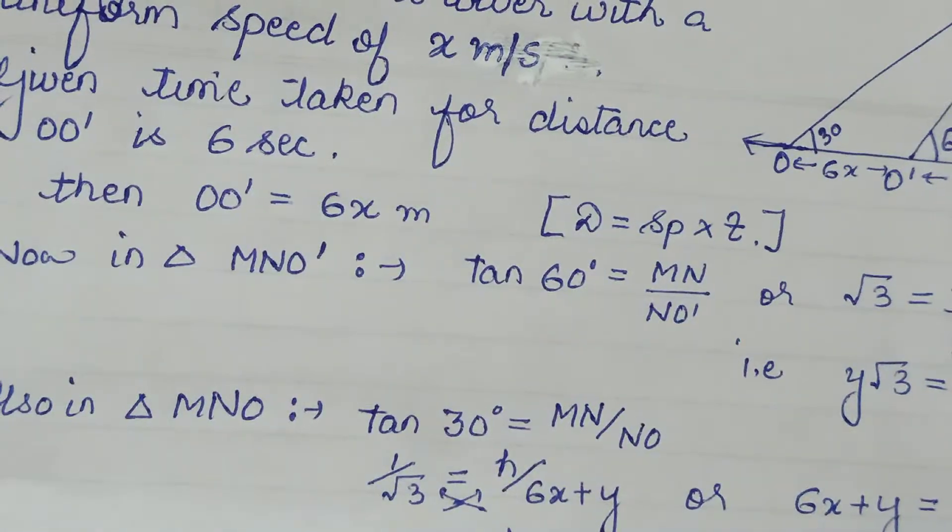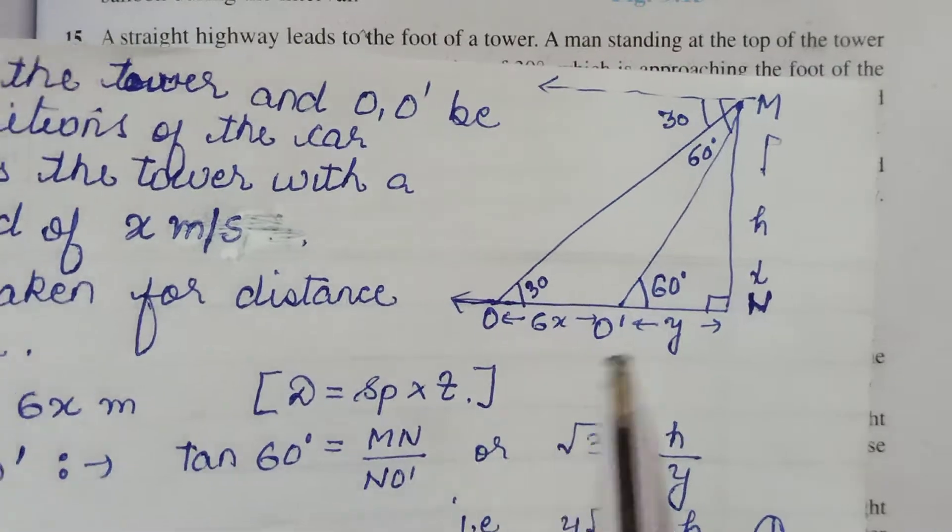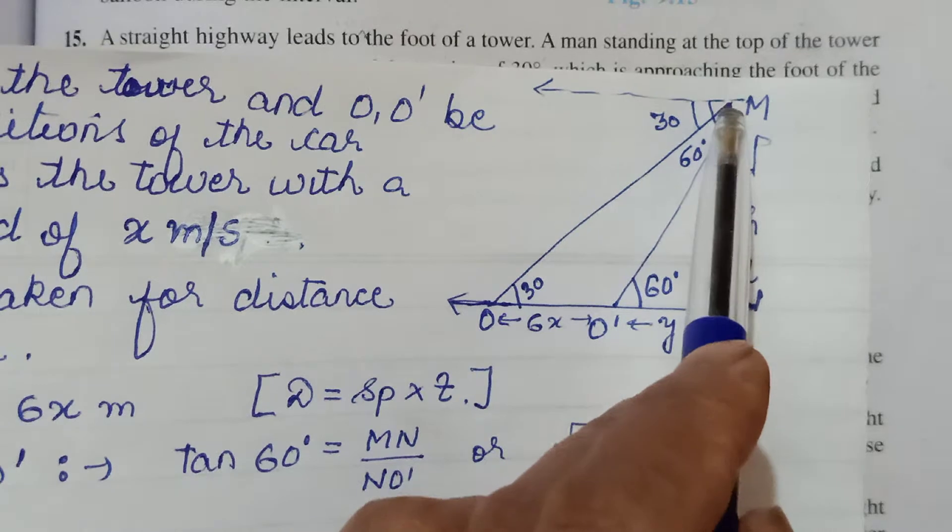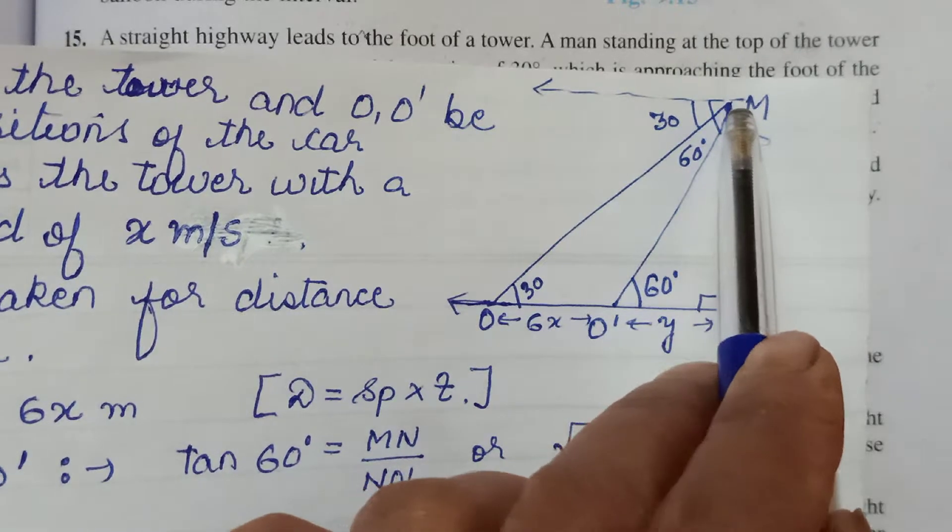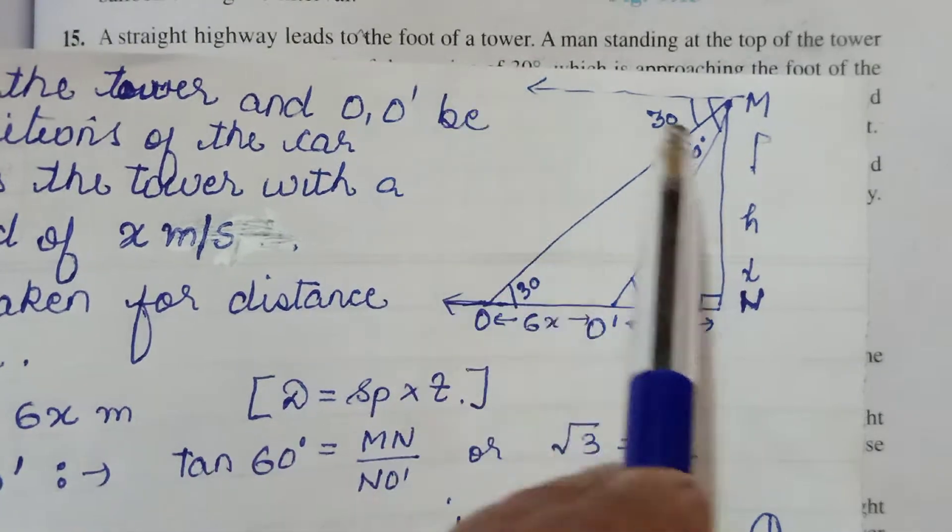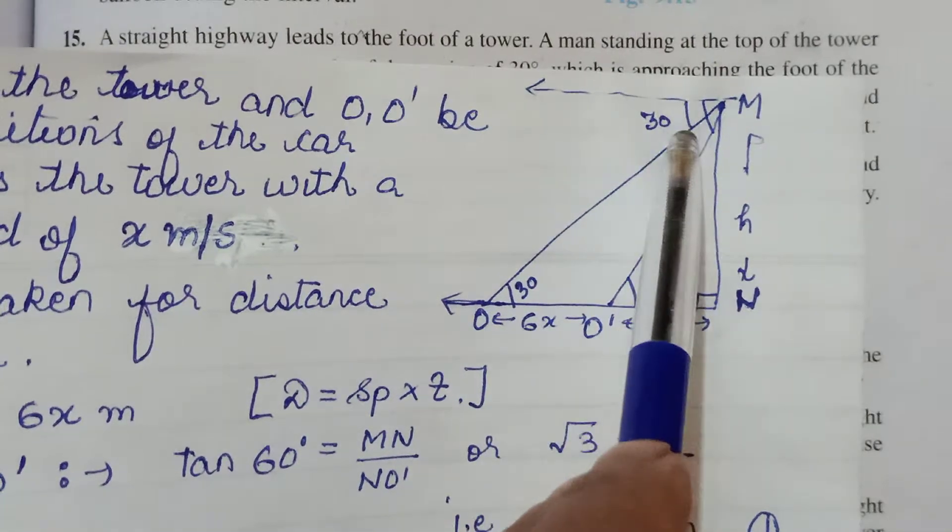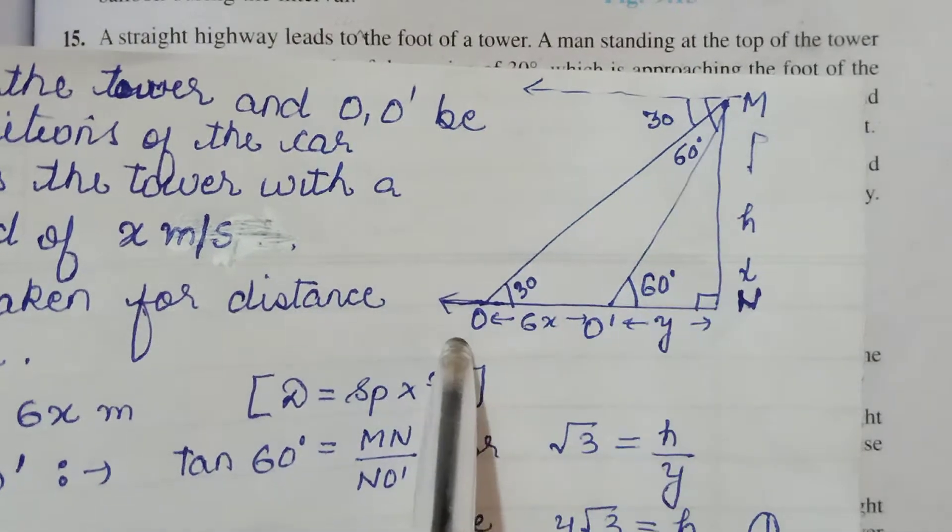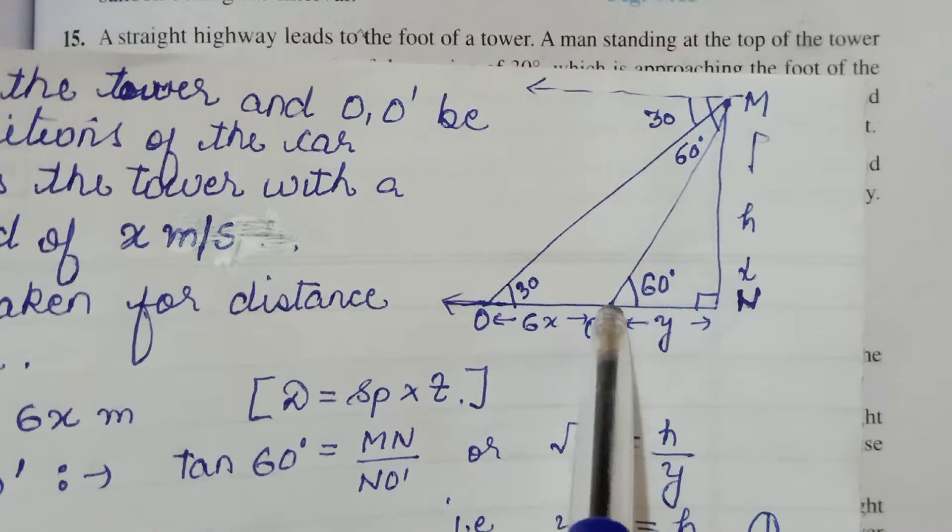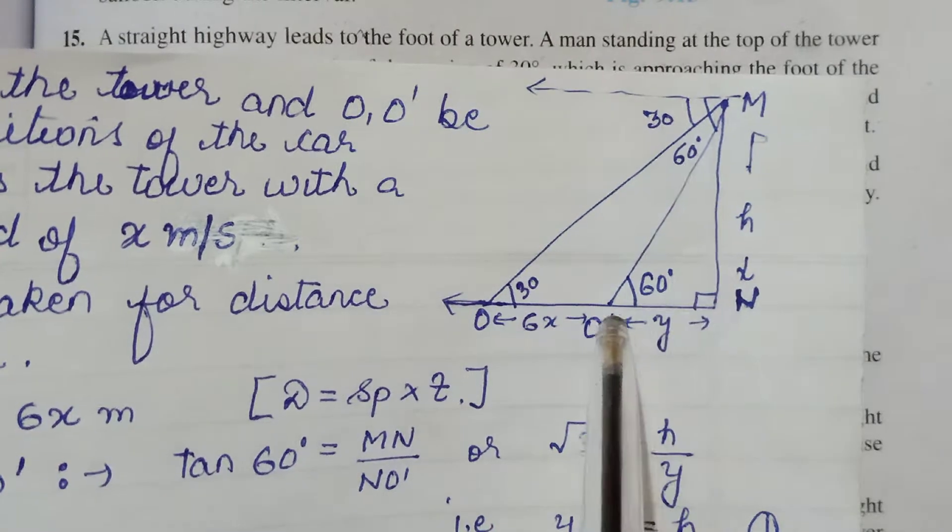So your figure will come out to be something like this. Let MN be the tower that we are talking about. A man is standing on top of this tower at point M and then the angle of depression is seeing. So you will make a horizontal line. Suppose O is the position of the car. Then this angle, angle of depression first is 30. Now the car has moved towards the tower in 6 seconds. Then it has reached O' and the angle of depression has become 60.